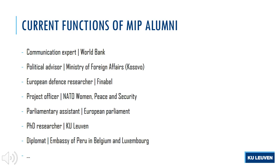Former students are the best ambassadors of the Master of International Politics program. You can find them in lots of places and international positions — for example, as a political advisor in one or other government, or working as a project officer for NATO, or as parliamentary assistance in the European Parliament. Some students go on to pursue academic research, registering for a PhD program in Leuven or perhaps elsewhere, and publishing their own research findings.